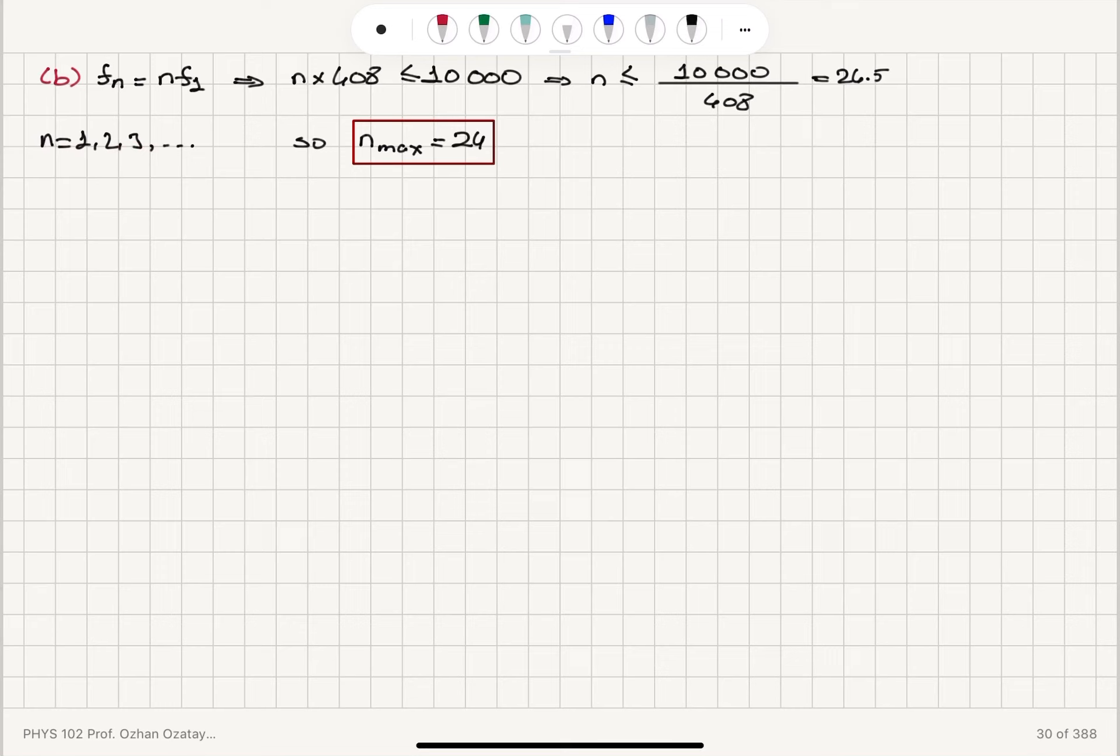N times 408 should be less than or equal to 10,000. So the maximum value we obtain here is 10,000 divided by 408, which is 24.5. But N is an integer, so the maximum value it can take would be 24.